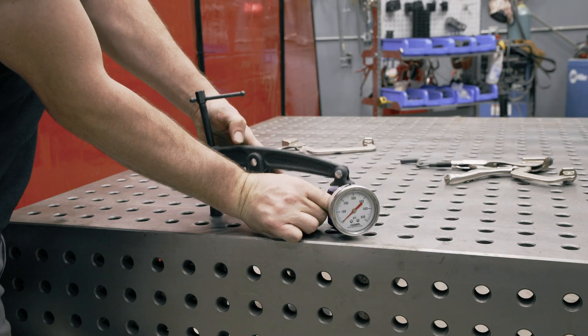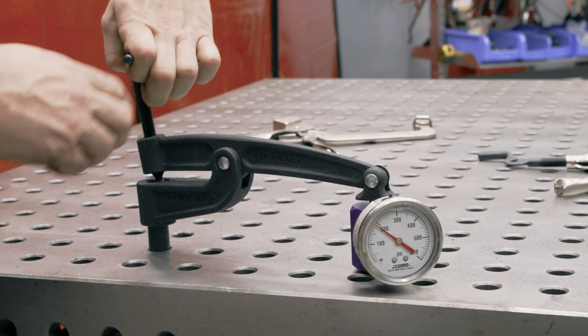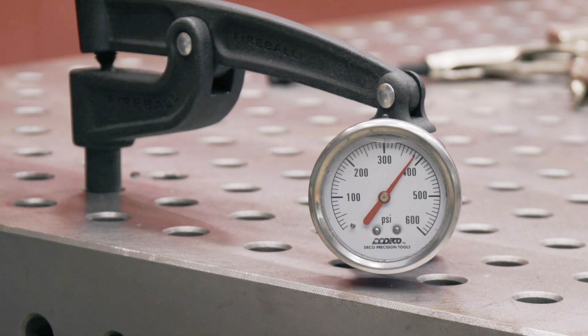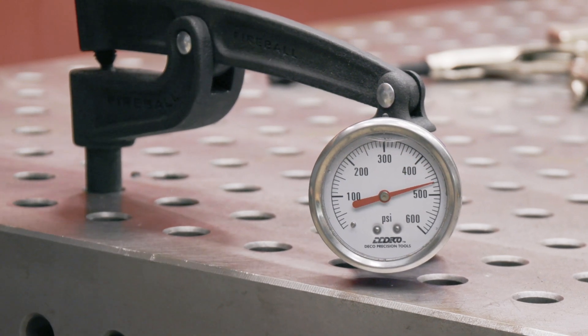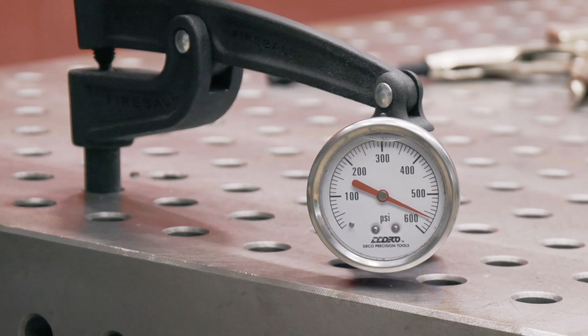And now the cantilevered clamp. Crank it up. And as you can see, we can get a lot more force with the cantilevered clamp. We can get up to close to 900 if we really crank on it. But that's a lot of force.